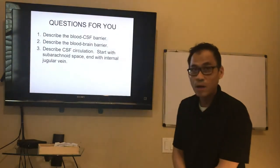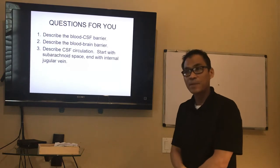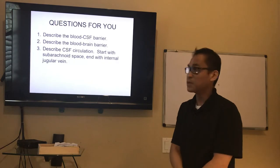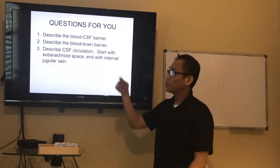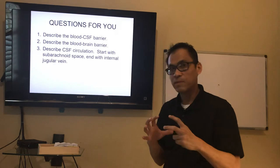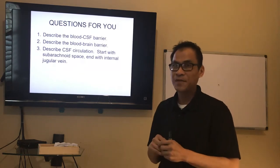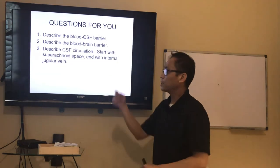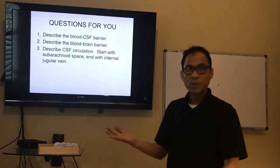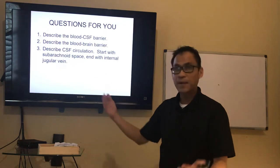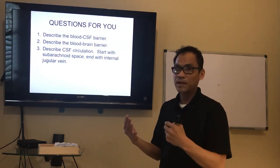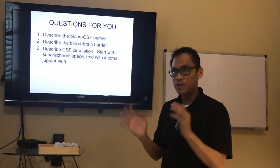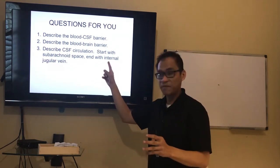Review: the blood-CSF barrier — the key is the ependymal cells with tight junctions, which generate the CSF. The blood-brain barrier involves two things: endothelial cells with tight junctions, and astrocytes with perivascular feet that limit capillary filtration. For CSF circulation: it starts in the subarachnoid space, flows up through the arachnoid granulations into venous blood at the superior sagittal sinus, and all dural sinuses drain to the IJV.